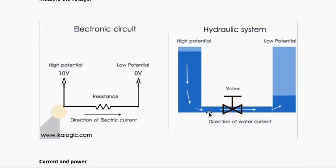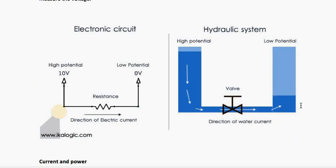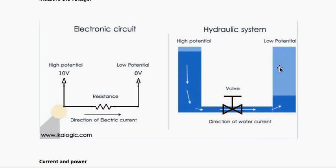Let me explain it via a hydraulic system. You see two tanks here. Suppose one tank is full of water — let's call it high potential. The other tank has no water or less water — let's call it low potential. Both tanks are connected with a valve, and the valve is closed for now. When you open the valve, water from the higher potential starts flowing through the valve to the lower potential.